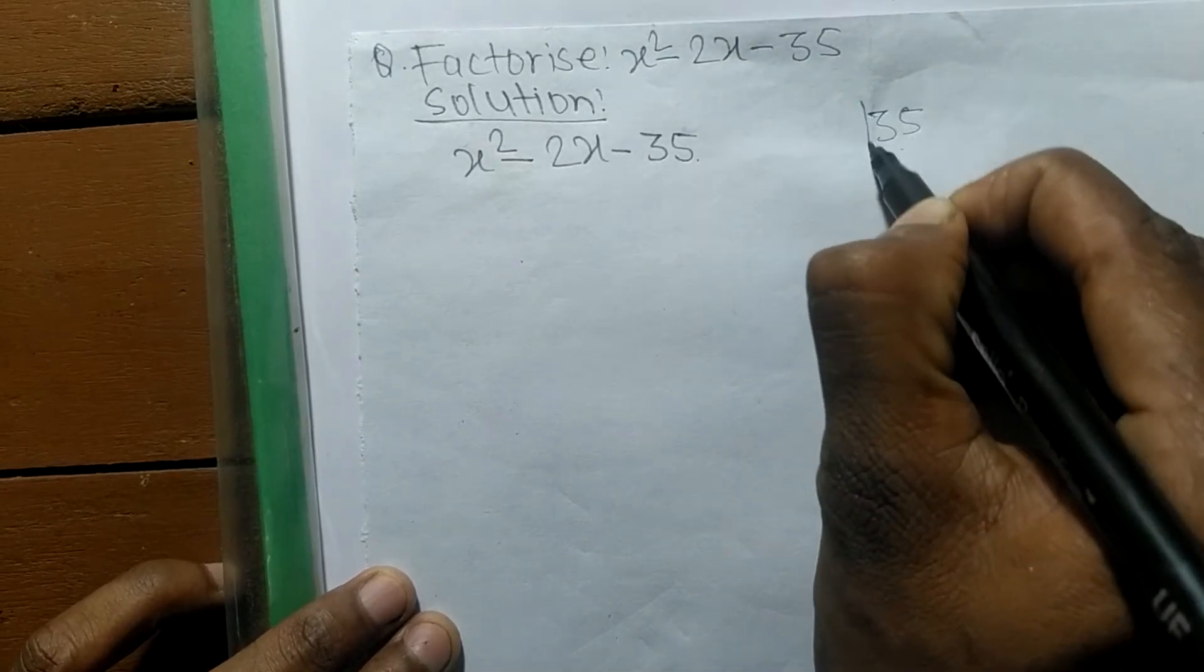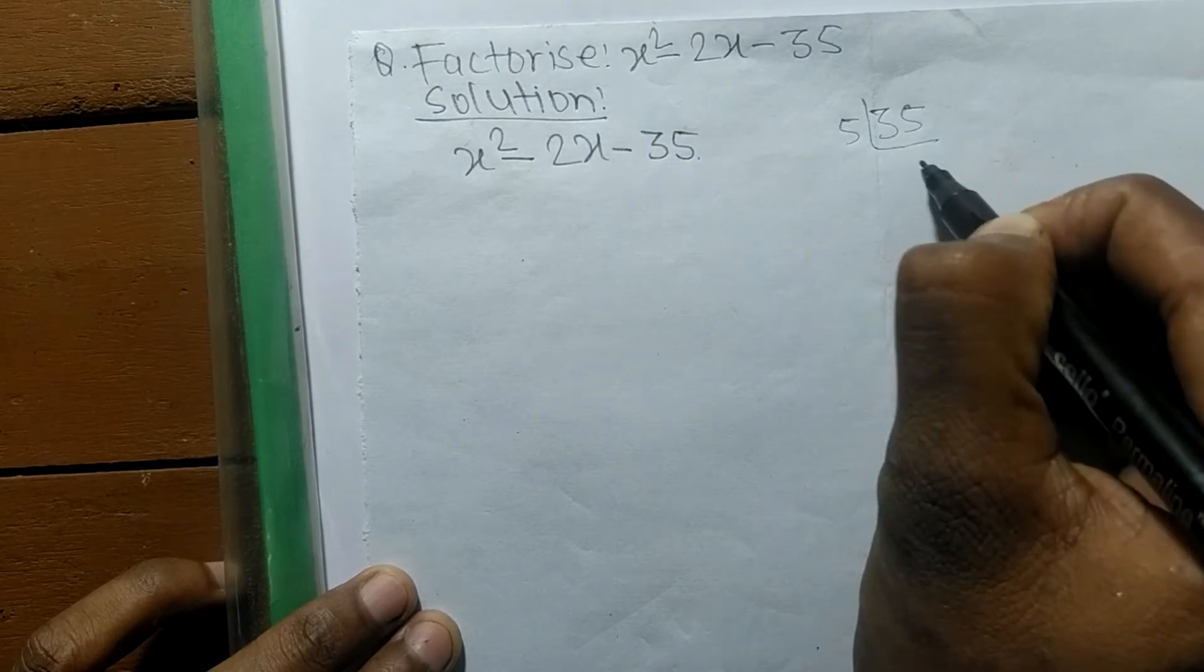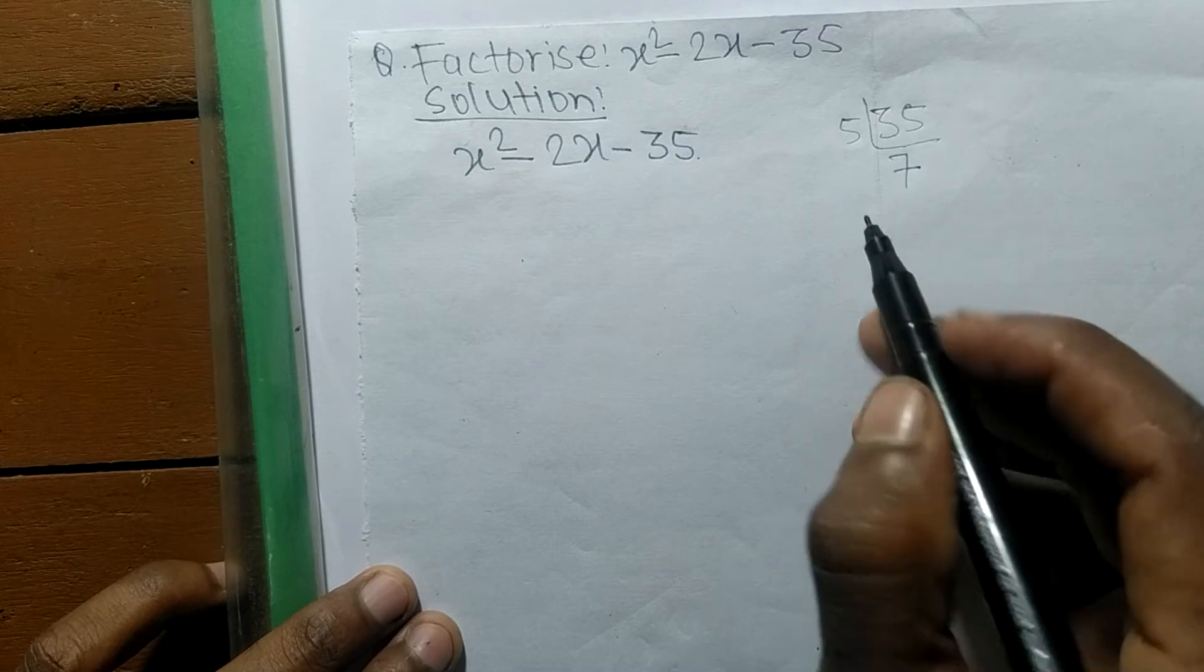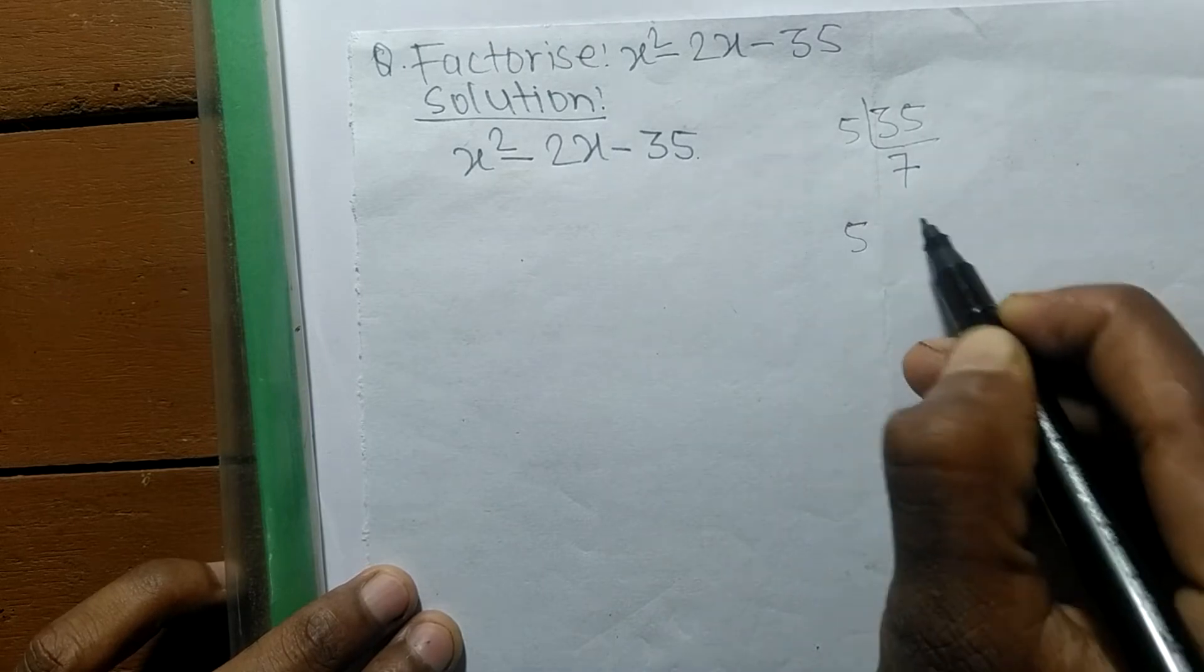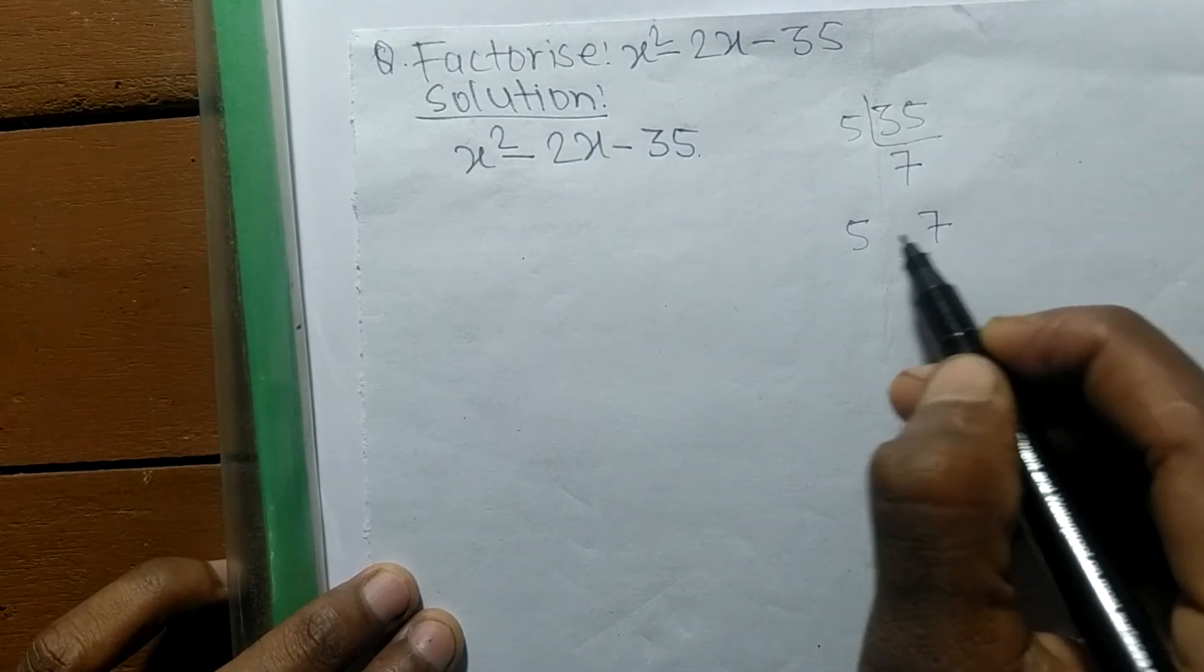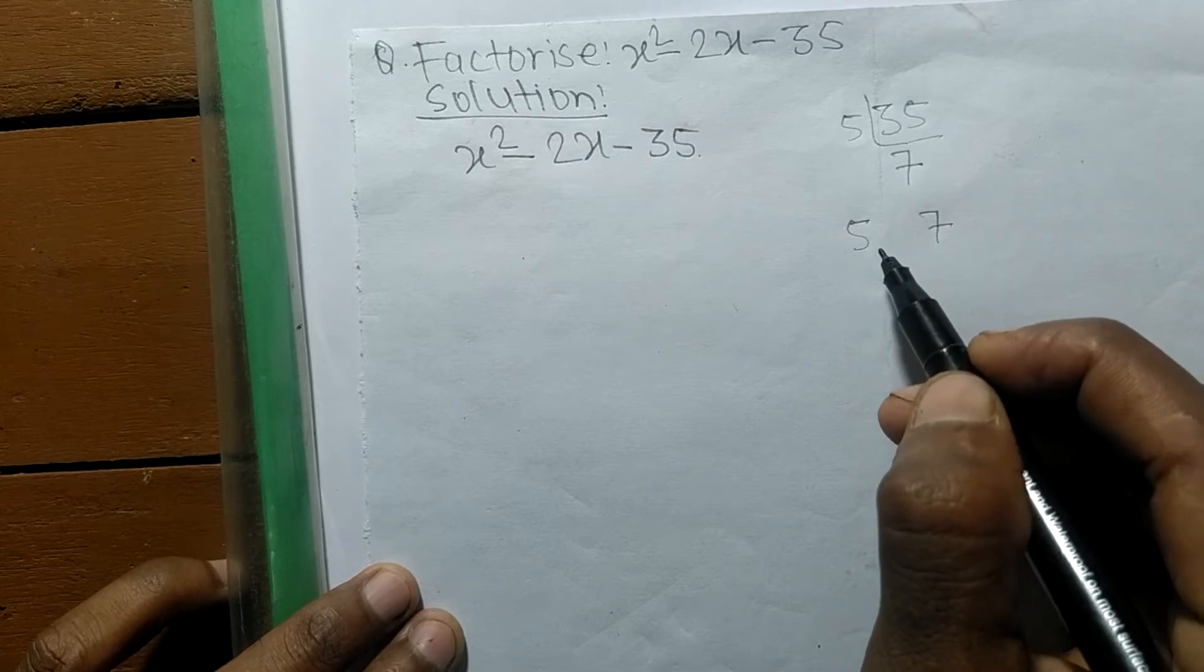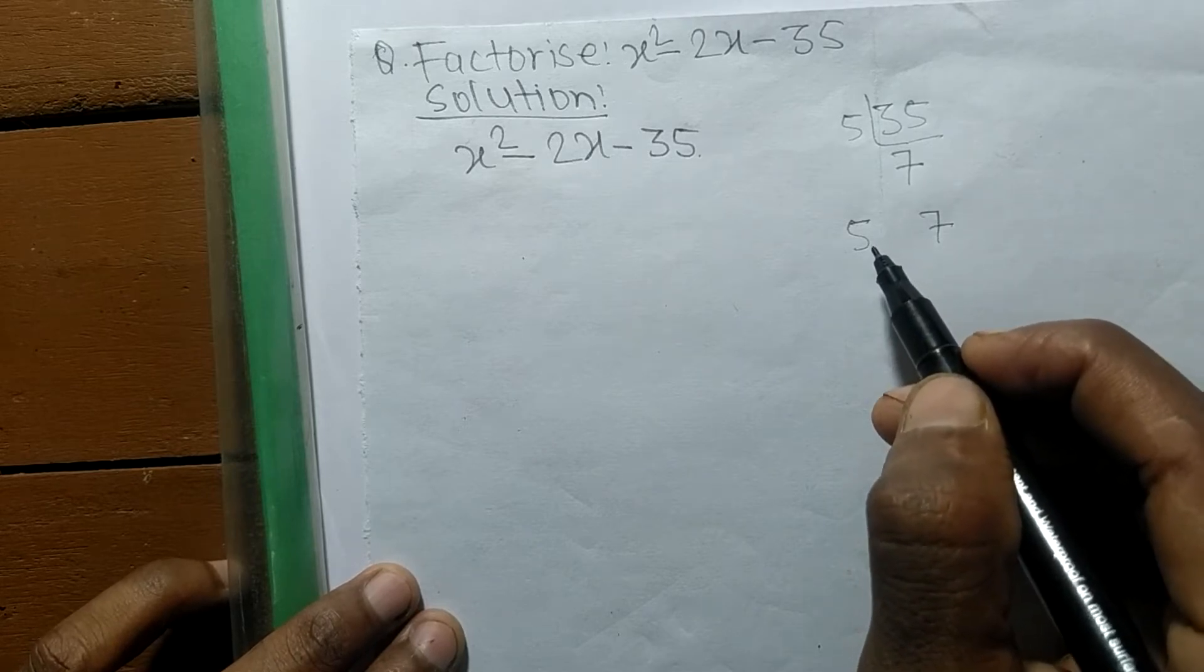So it is 5 times 7, which equals 35. So we got the numbers here: 5 and 7. From these both numbers we have to find out such a number that by adding, we get -2.